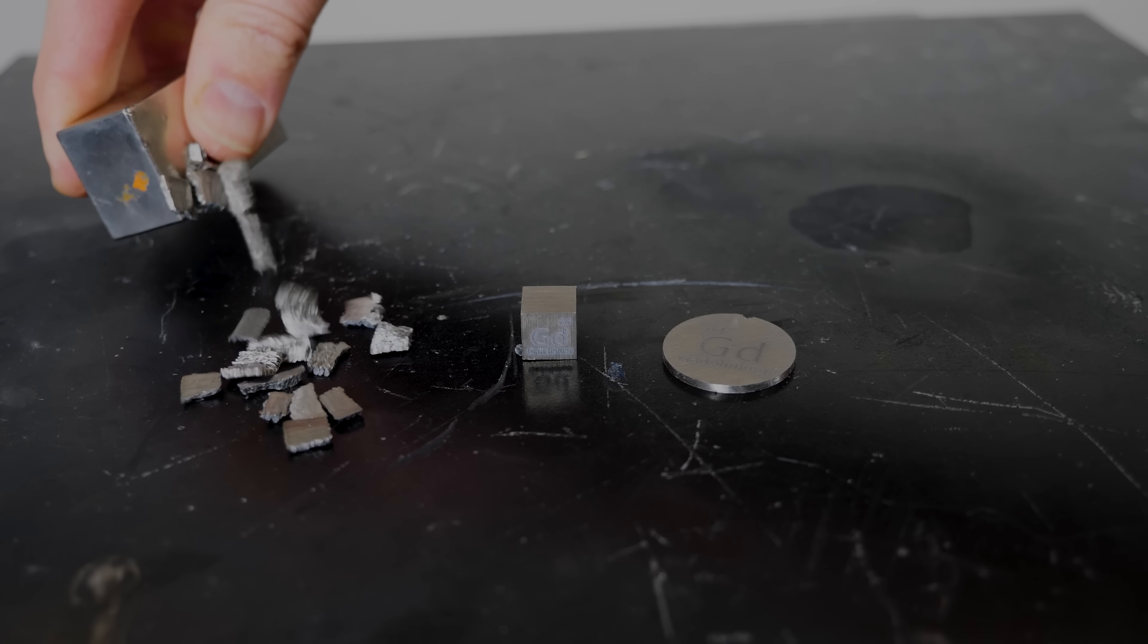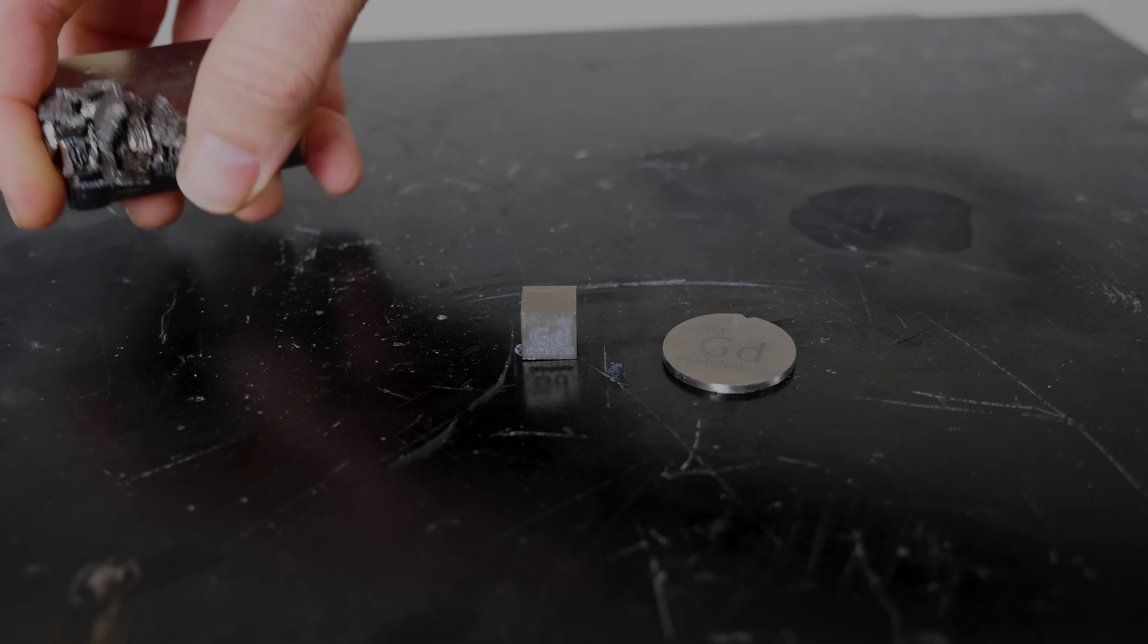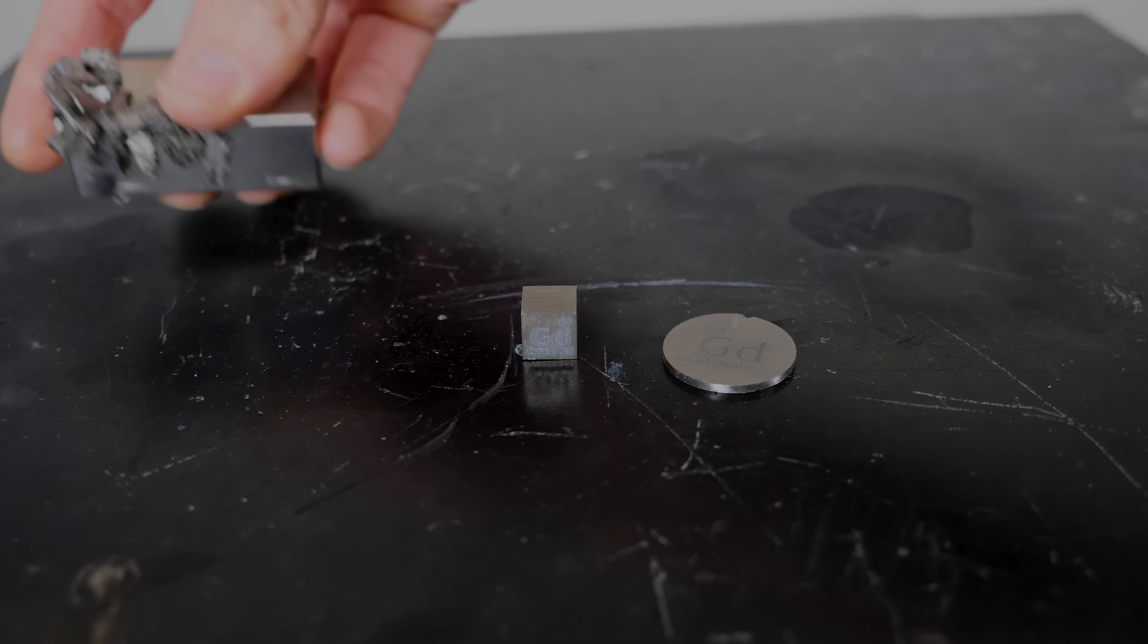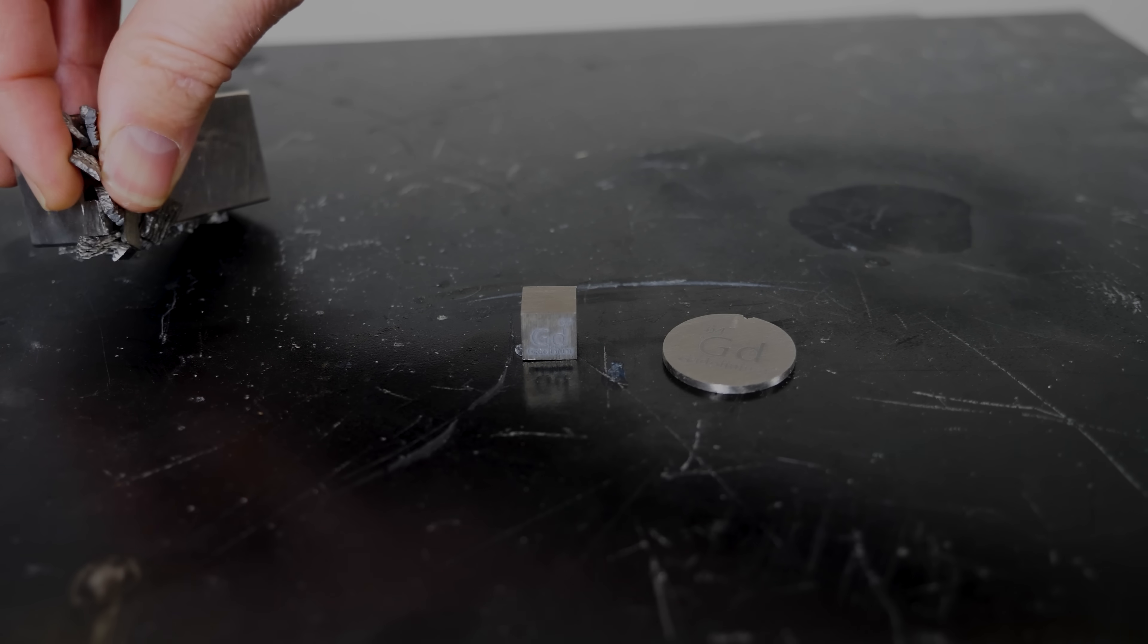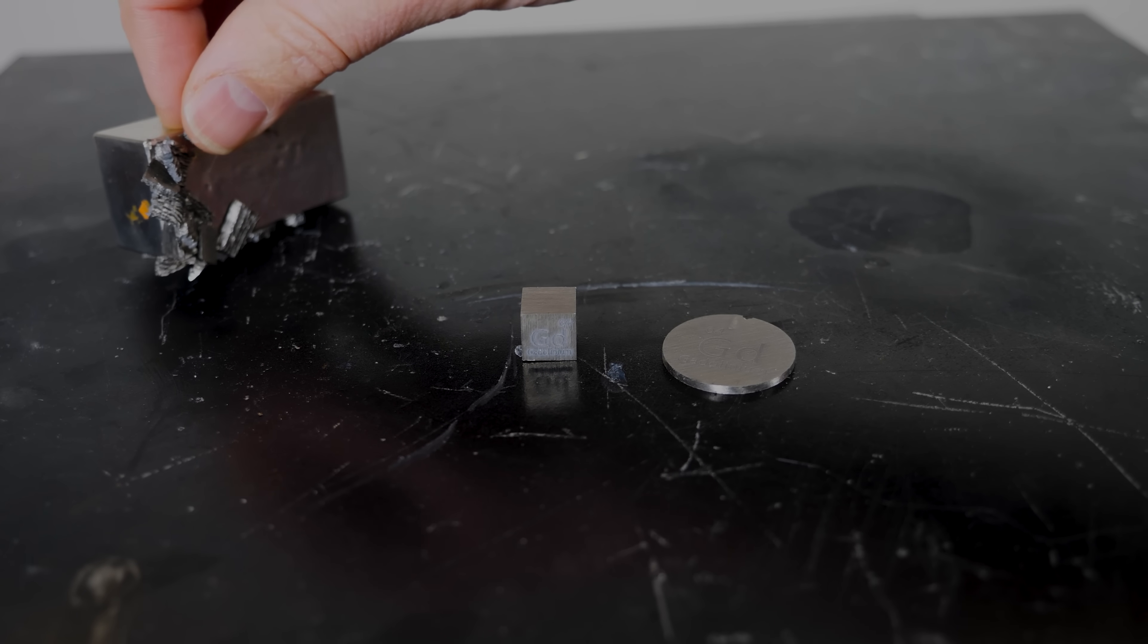So you can see that this gadolinium is attracted to magnets. So at this temperature, it's strongly paramagnetic, not quite ferromagnetic. But an interesting thing happens when these get attracted to the magnet. They actually change temperature.